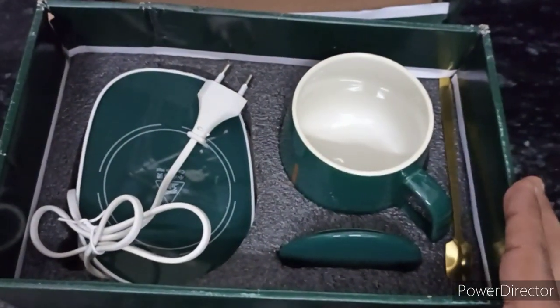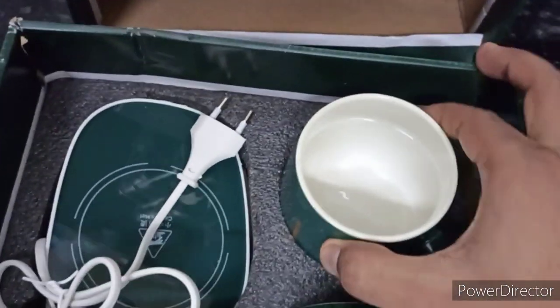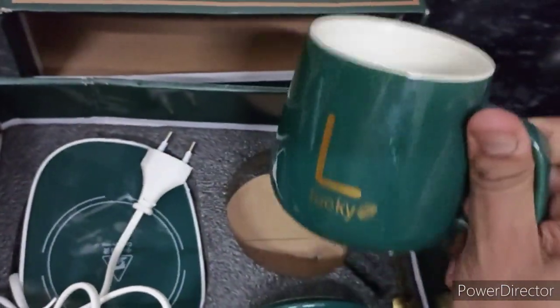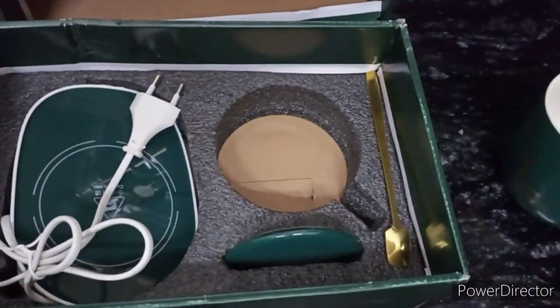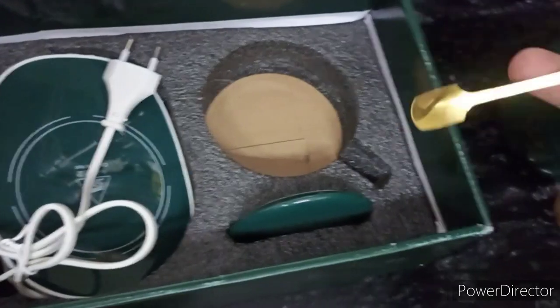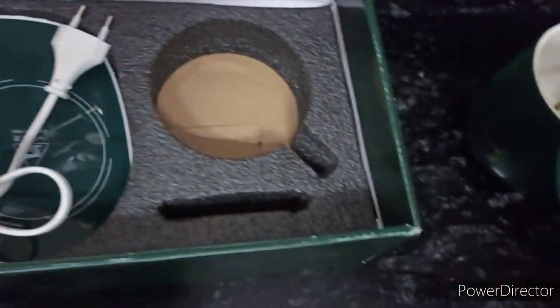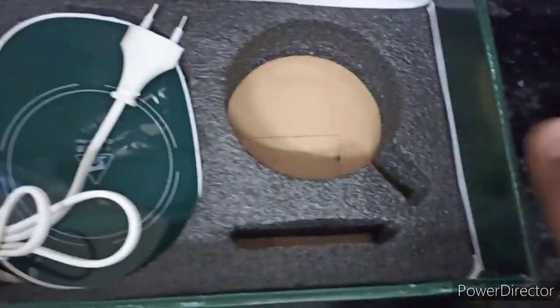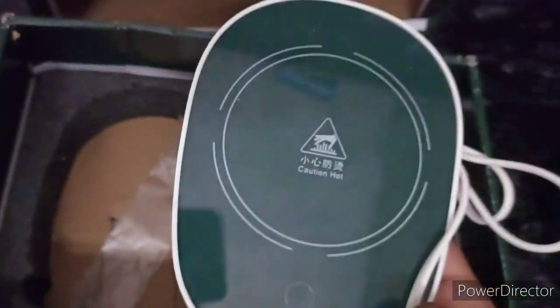Here I will unbox it. You will get a ceramic mug, a spoon or stirrer, and the lid.